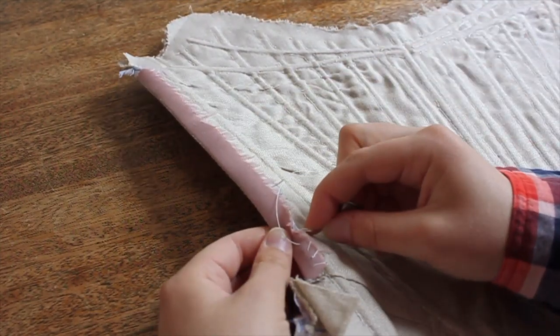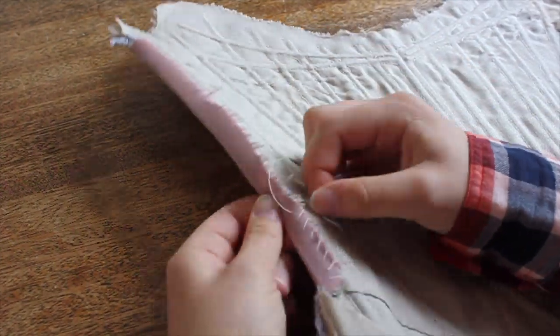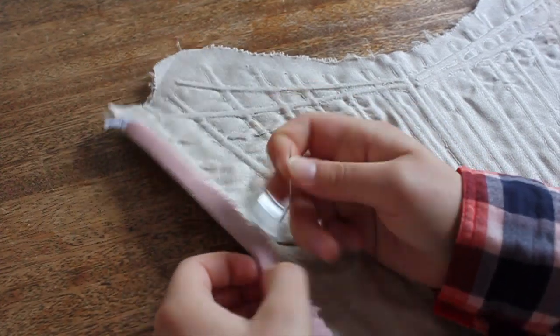My last step was securing the seam allowances with rough whip stitches, as is often seen on originals. These stitches only catch the lining layers and are not visible through the front of the stays.